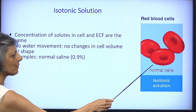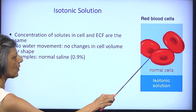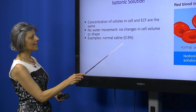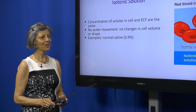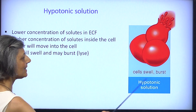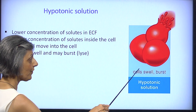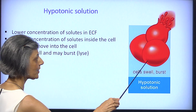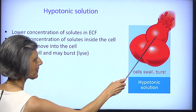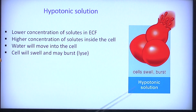An isotonic solution has exactly the same concentration of solutes as inside the cell, so there is no net movement of water in or out. Normal saline at 0.9% is administered to patients when we don't want to change the shape of their cells. In a hypotonic solution, there are fewer solutes outside, so water is pulled into the cells — they may enlarge, swell, and sometimes burst (lyse and die), so we must be very careful when giving hypotonic solutions.